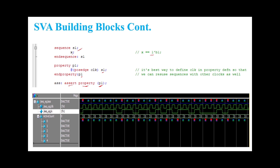Remember, if we define the clock inside a property it is the best practice, so we can reuse the sequence with other clocks as well. Looking at the sample waveform — what we want is that at every passage of the clock, s1 (x == 1) should hold. The red triangle means assertion is failing. At certain clock edges where the value of x is 0, the assertion is failing.